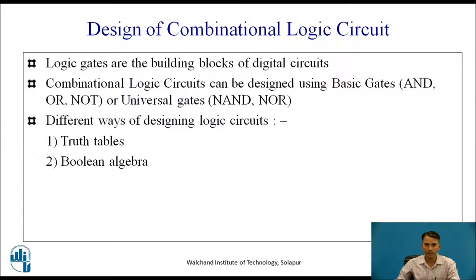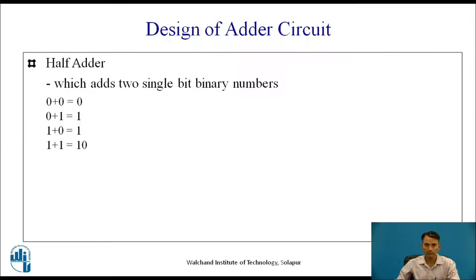In combinational logic circuits, basic gates AND, OR, NOT, and universal gates NAND and NOR are used to design. There are different ways of designing logic circuits. If you have a truth table, from the truth table you can obtain a Boolean algebra equation, and from the Boolean algebra equation you can construct a circuit. Or if you have only Boolean algebra, from Boolean algebra you can directly design a combinational logic circuit.